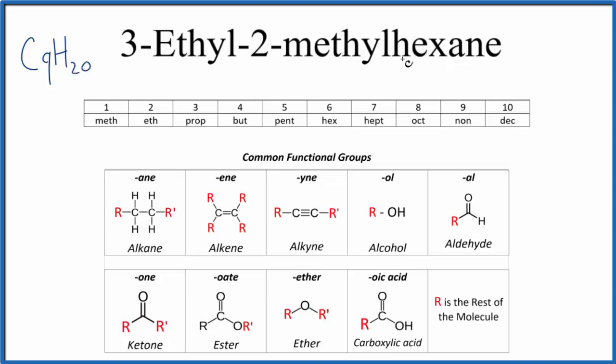So to start with, we have hexane. When we see -ane on the end of the compound, that tells us we have an alkane, and the carbons will be single-bonded to each other.